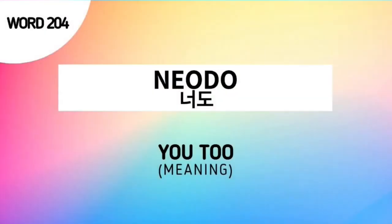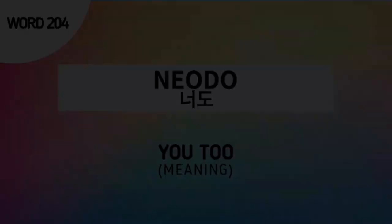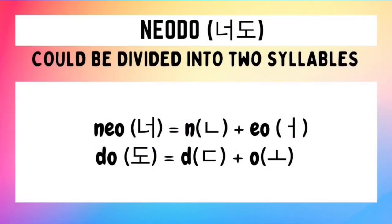The meaning of the word Nodo is 'you too' or 'you as well.' How do we spell Nodo in Hangul? For the first syllable No, we draw a niyan character followed by the A character. For the second syllable Do, we draw a dikit character followed by the A character. We combine the Hangul for these two syllables to form the Hangul of the word Nodo.